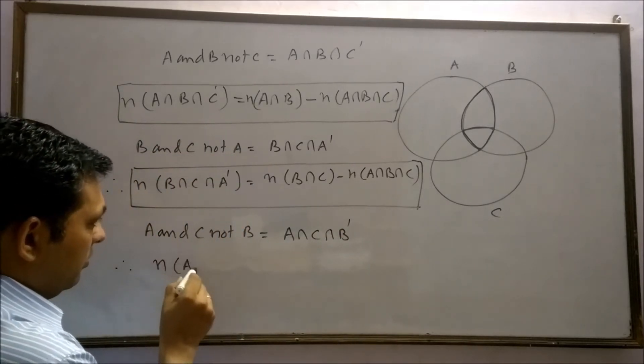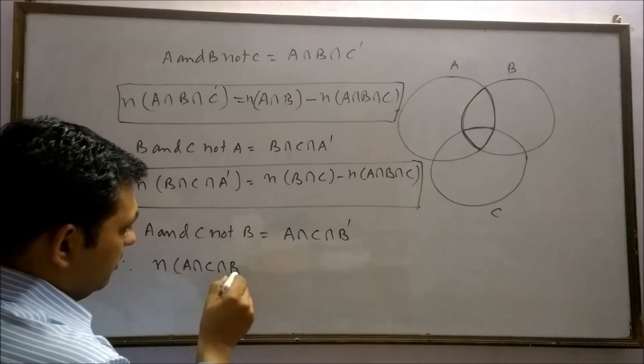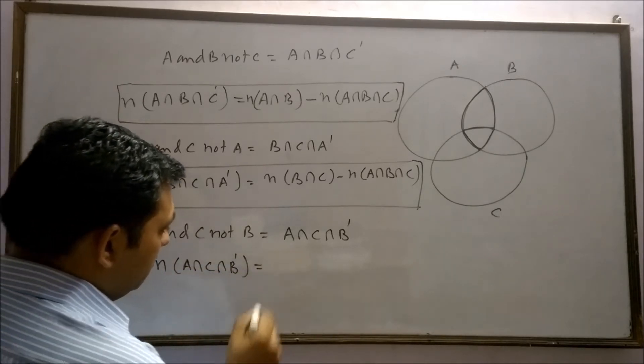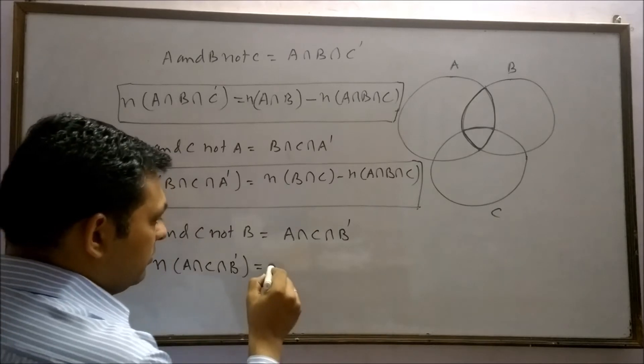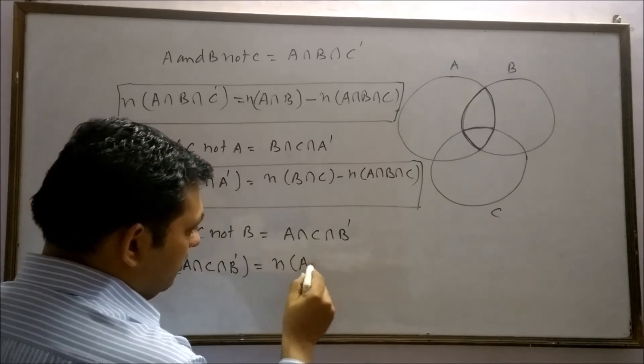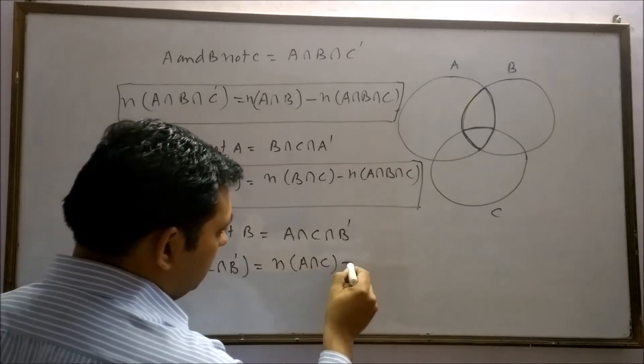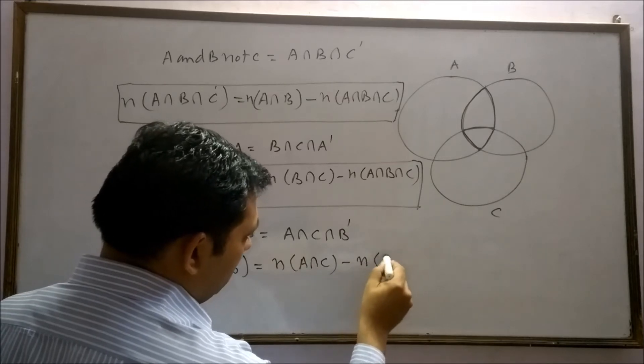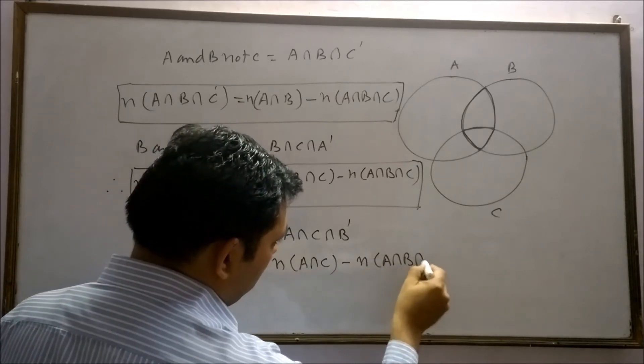Therefore, n(A∩C∩B') can be written as n(A∩C) - n(A∩B∩C).